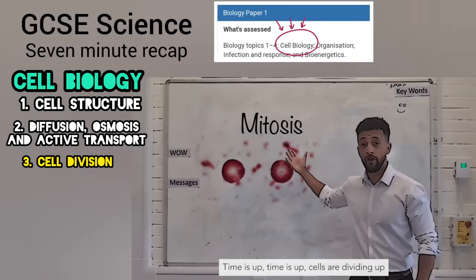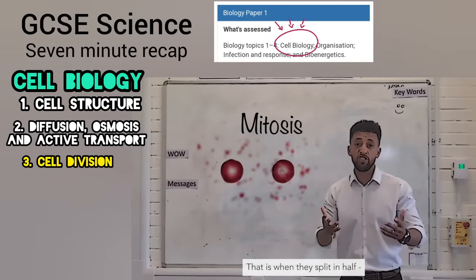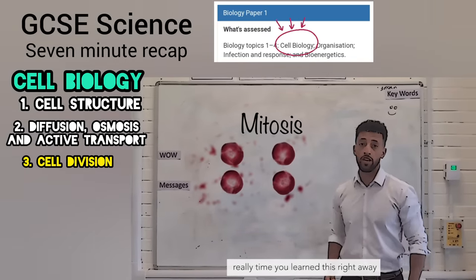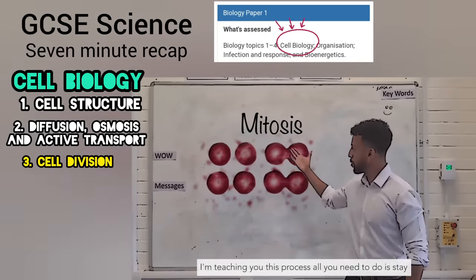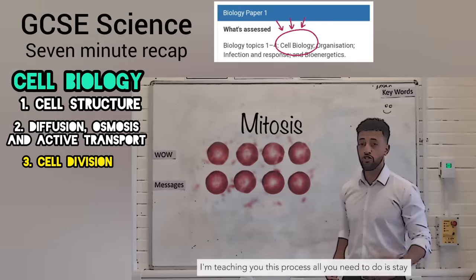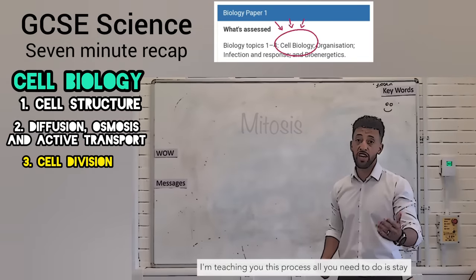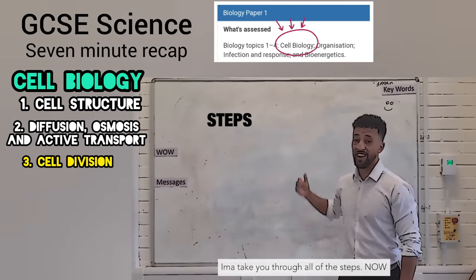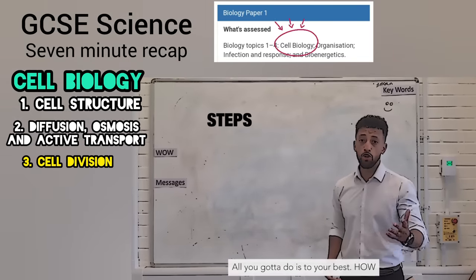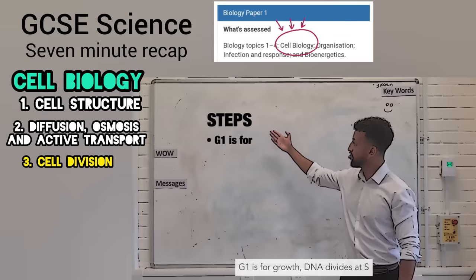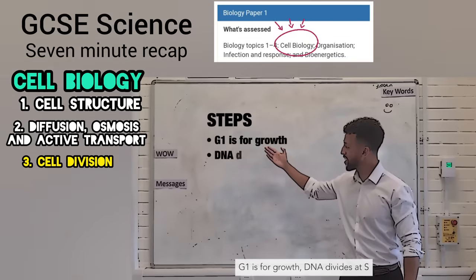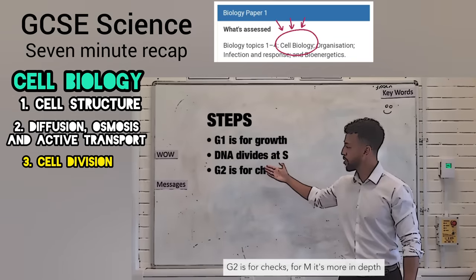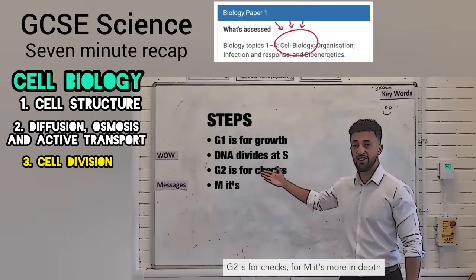Cells are dividing up — that's when the cell splits in half. Your cells are dividing every day, I'm teaching you this process. I'mma take you through all of the steps — all you gotta do is do your best. G1 is for growth, DNA replicates in S, G2 is for checks, but for M it's more in depth.